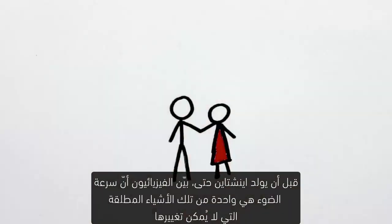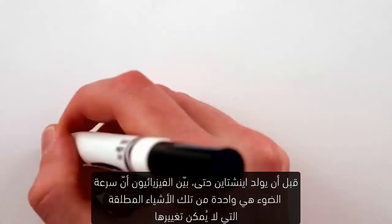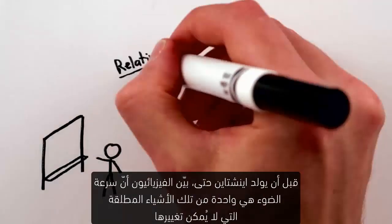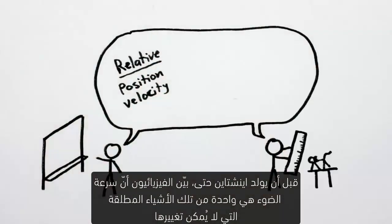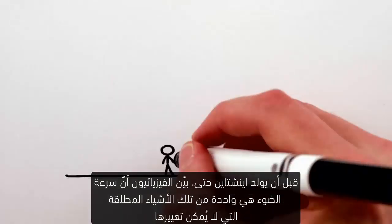Now for the problem. Before Einstein was even born, physicists showed that the speed of light was one of those absolute things which can't be changed by a switcheroo.